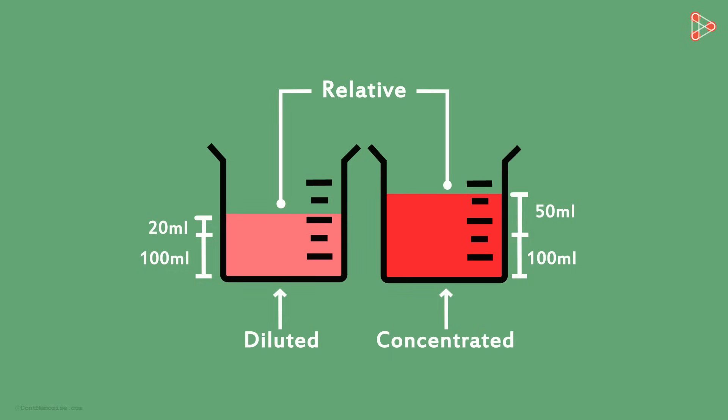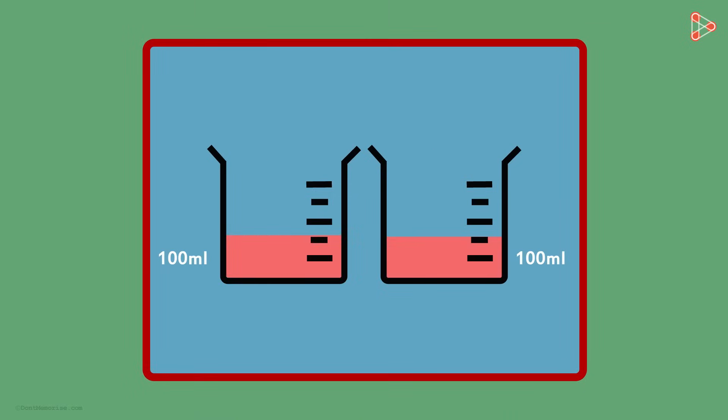Let me give you another example. We take two empty beakers again, both with 100 milliliters of some solution. The first beaker has 20 milliliters of solute and 80 milliliters of solvent. And the second one has 25 milliliters of solute and 75 milliliters of solvent.